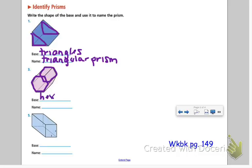So the bases are hexagons because we have two hexagonal faces that are parallel. They're never going to meet and they're congruent. They're exactly the same. So that makes this a hexagonal prism.